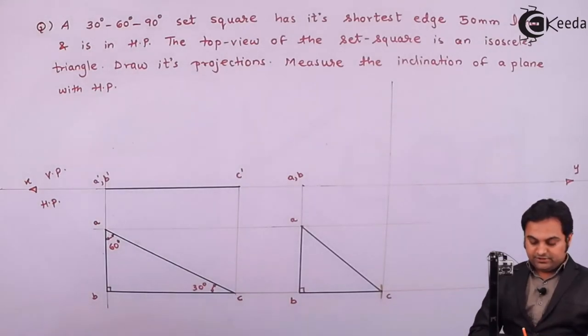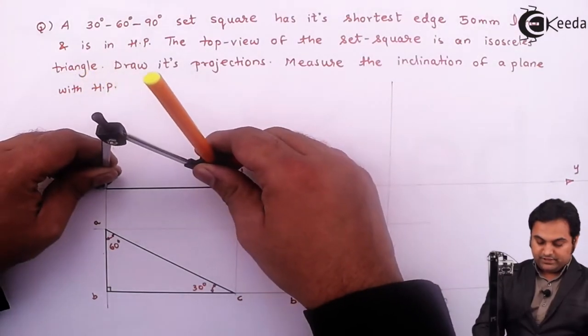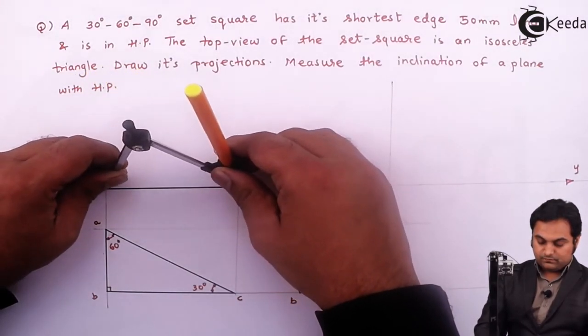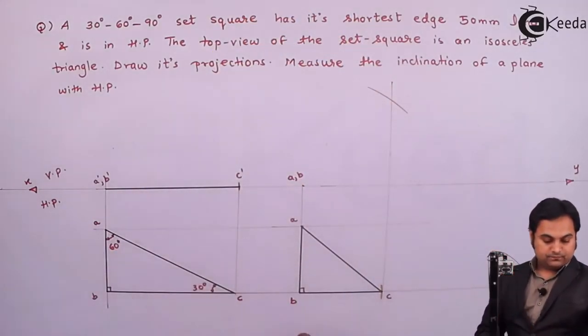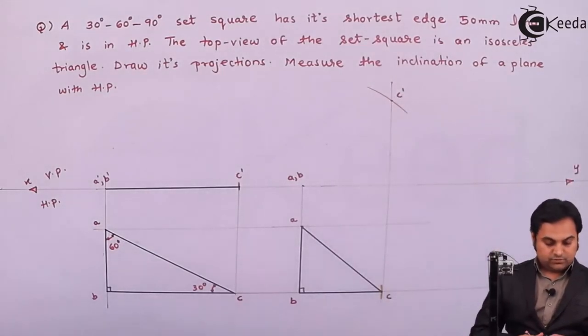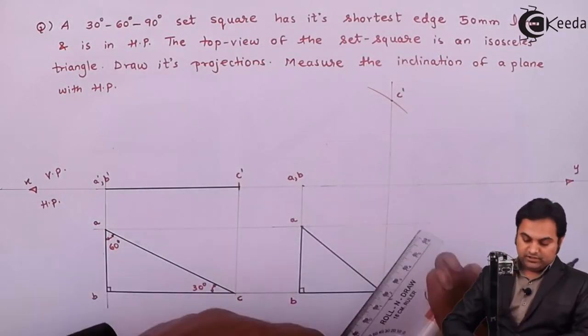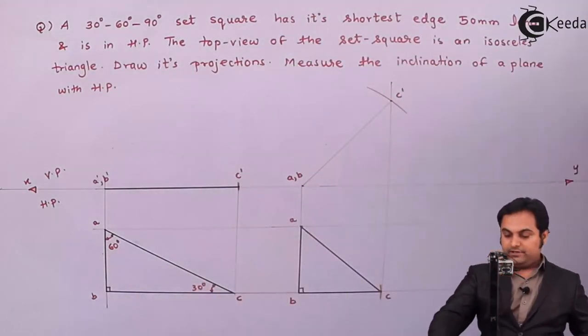Then I'll measure the distance from A dash B dash up to C dash. Keeping this point here, cutting this line. This is C dash. Next, joining them with the help of light line. And then I'll make it dark.